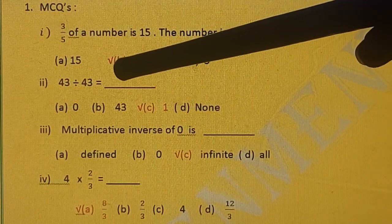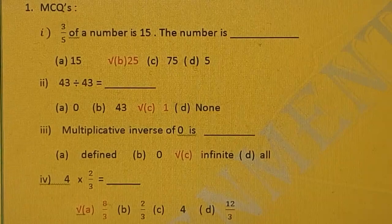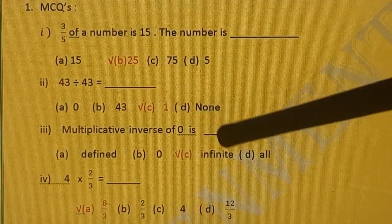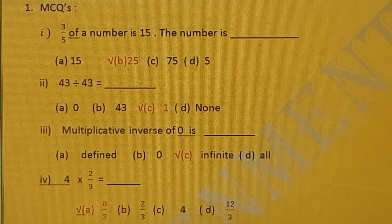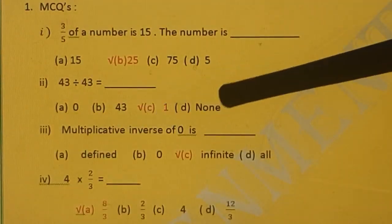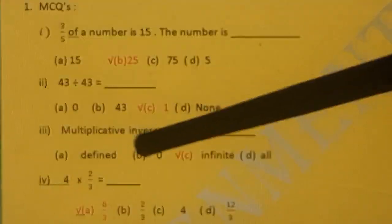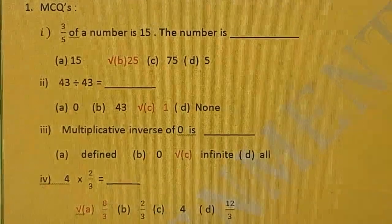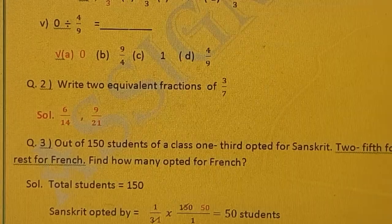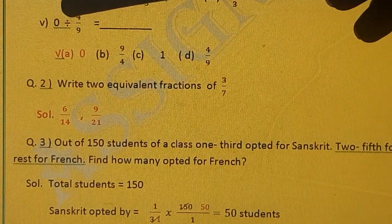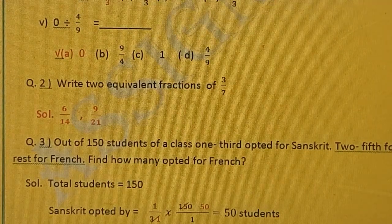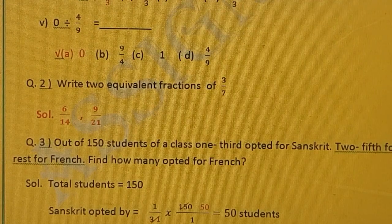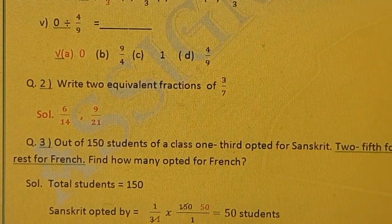43 divided by 43, answer is 1. Multiplicative inverse of 0 is infinite. Multiplicative inverse means reciprocal. Next is 4 multiplied 2 upon 3, 4 to the 8, 8 upon 3. No cutting is there in this part. 5th part, 0 divided by 4 upon 9. 0 divided by 4 upon 9 will give you the answer 0 only. It is our fact we have done in our properties.